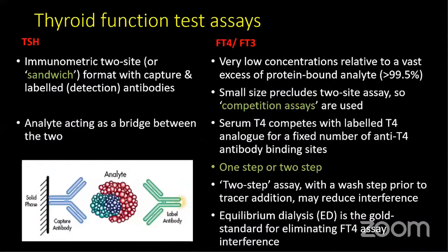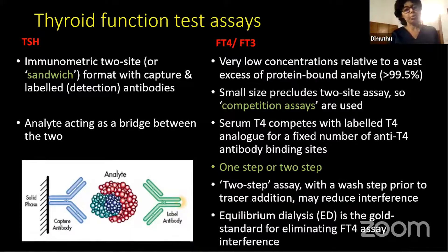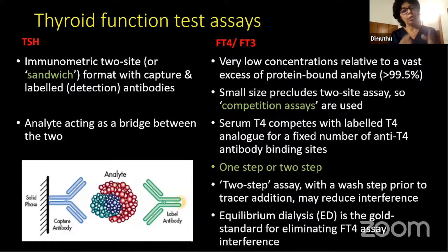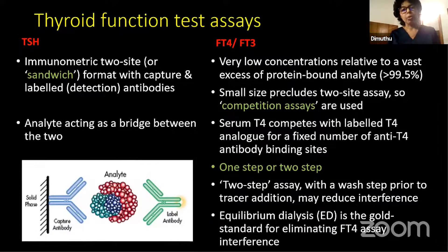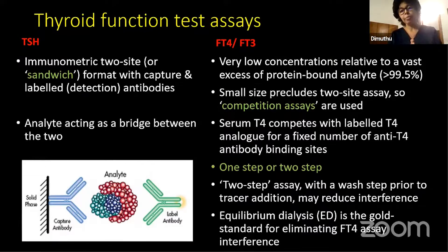With that introduction to the cases, I'd like to speak about the fundamentals of the thyroid function test assays. When it comes to TSH, it's a two-site or sandwich format assay — there's a capture antibody and a detection or labeled antibody, and the analyte TSH acts as a bridge between the two antibodies. When it comes to free thyroid hormones, T4 and T3, we're unable to use the same assay because the particles are very small and concentrations are very low relative to the vast excess of the bound analyte. So we use a different type — a competition assay.